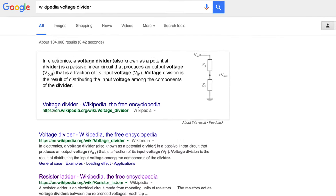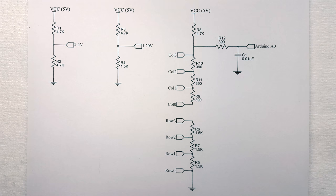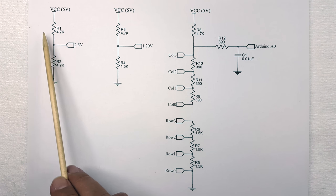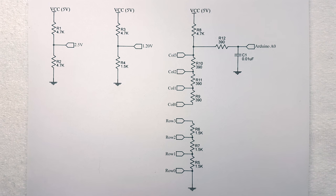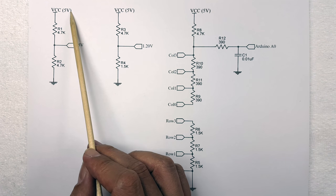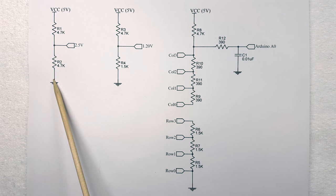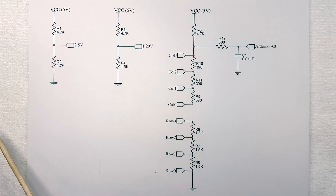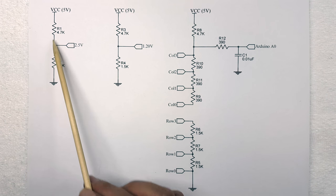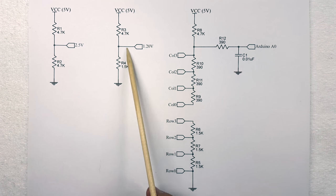To understand what made that possible we need to talk about voltage dividers. So here's a voltage divider. The voltage at this junction is controlled by the ratio of these two resistors. If we use identical resistors, say 4k resistors, this 5-volt supply will be divided, hence the name voltage divider, into two identical halves, 2.5 volts each. If we change the ratio of these resistors, we would get a different voltage at this junction.